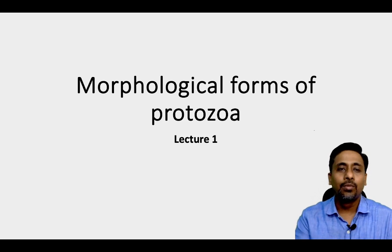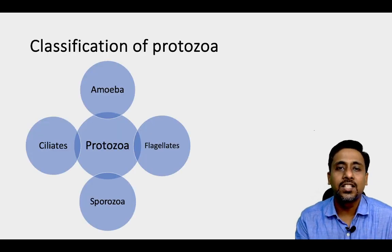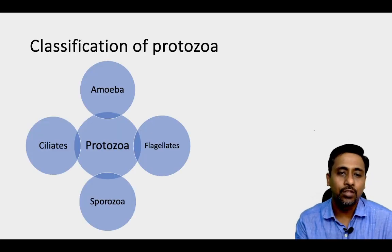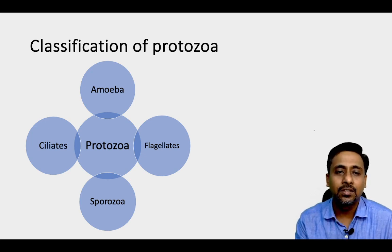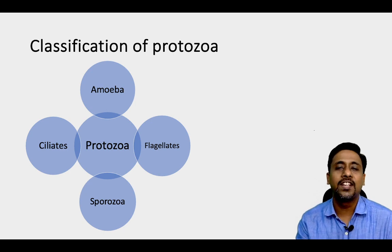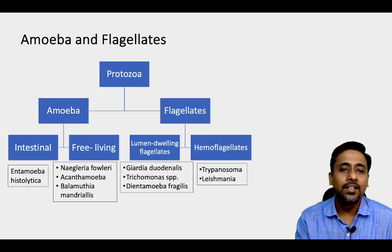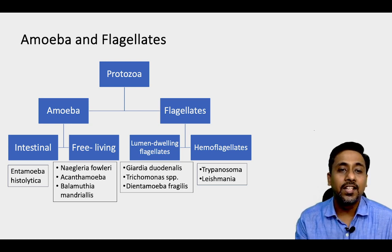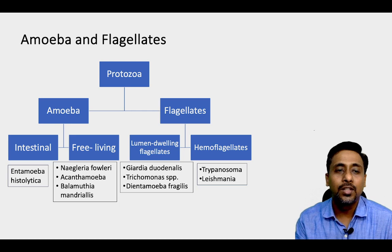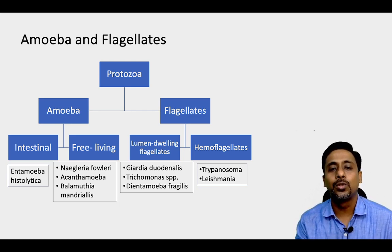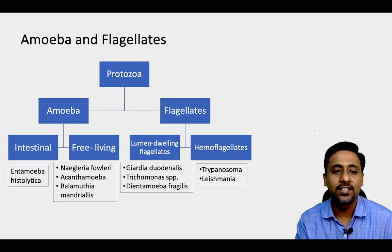Just a quick recap of the classification of protozoa. The protozoa are classified into 4 types on the basis of morphological forms: amoeba, flagellates, sporozoa and ciliates. Among these, the amoeba are further classified into intestinal amoeba and free-living amoeba. Flagellates are further classified into lumen-dwelling flagellates and haemoflagellates.